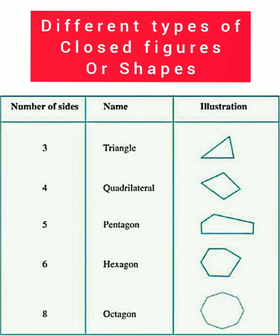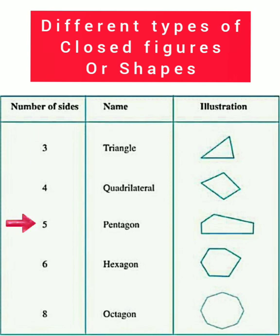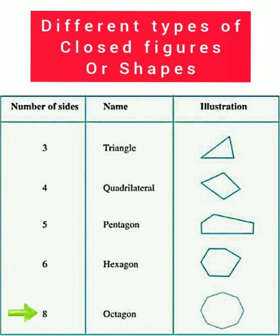Here are some examples of closed shapes with straight lines. When a closed figure has three sides, it is called a triangle. When a closed figure has four sides, it is called a quadrilateral. A closed figure having five sides is known as a pentagon. A closed figure having six sides is known as a hexagon. And a closed figure having eight sides is known as an octagon. Is it clear everyone? Very good.